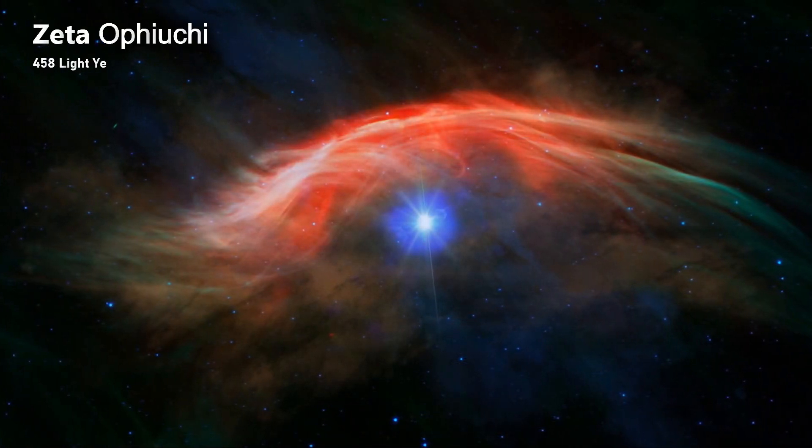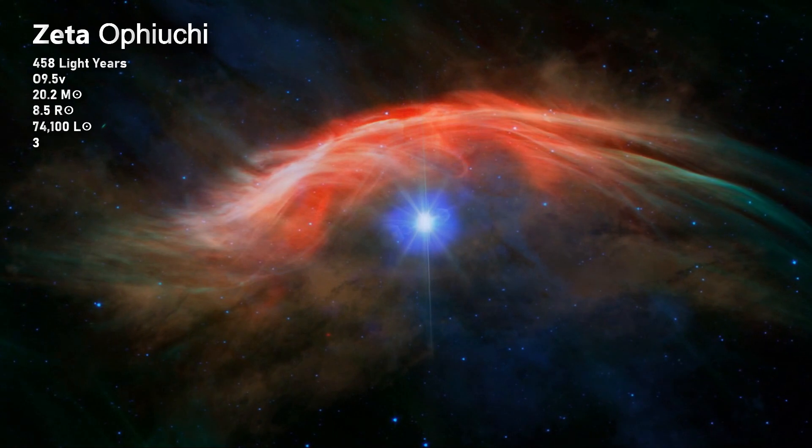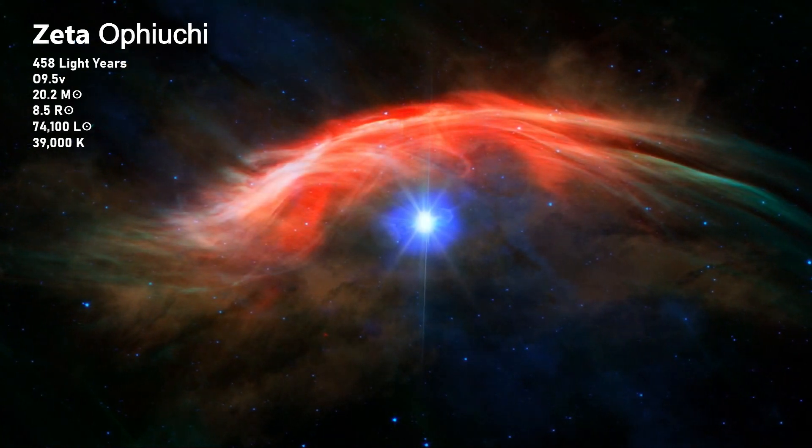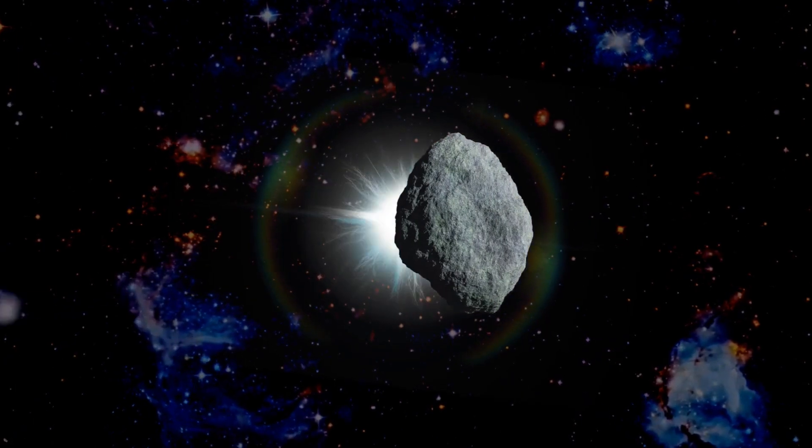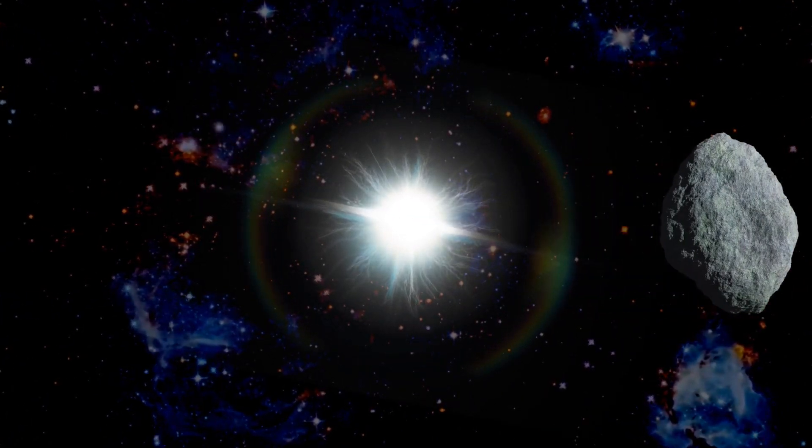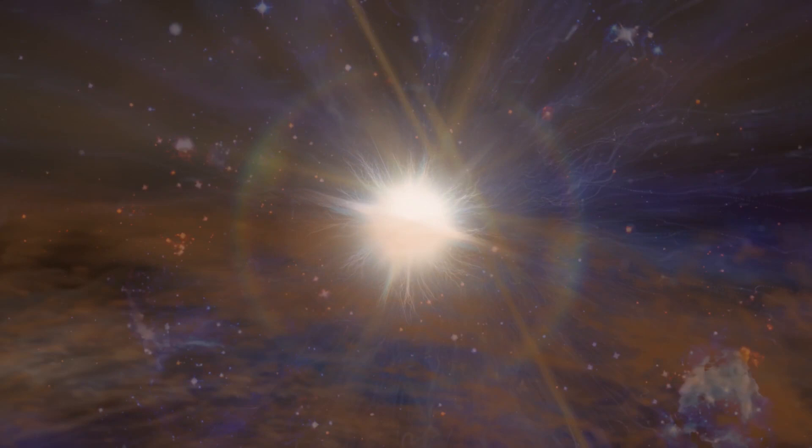Zeta Ophiuchy is an unremarkable second magnitude star in the serpent-bearing constellation of Ophiuchus. Located near the celestial equator, it lies along the ecliptic plane and can be occulted periodically by asteroids. Hidden by a mysterious and dusty veil, the star is the closest O-class star to our solar system, and a true Goliath of our local area.